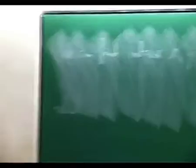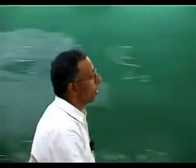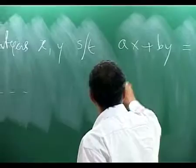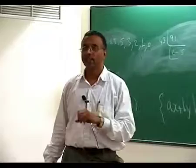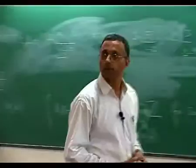Let us go back and look at this example: 91 and 43. Their HCF is 1, so there must exist integers x and y such that 91x + 43y = 1. How do you explicitly solve that? All we know right now is that a solution exists — how do you actually go and find x and y?